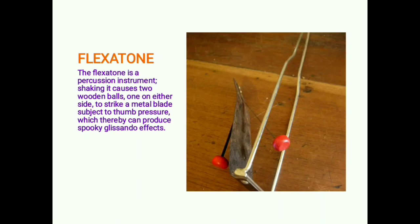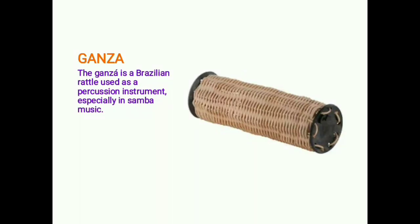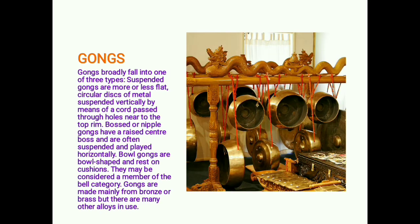The flexatón is a percussion instrument. Shaking it causes two wooden balls, one on either side, to strike a metal blade subject to thumb pressure, which can thereby produce a spooky glissando effect. The gansa is a Brazilian rattle used as a percussion instrument, especially in samba music.